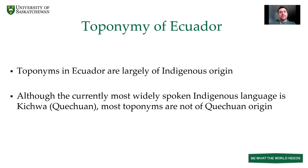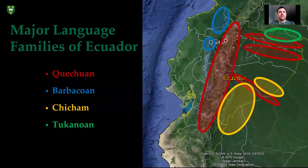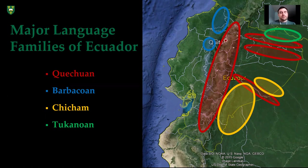Ecuadorian toponyms are largely of indigenous origin. Currently the most widely spoken indigenous language in the country is Kichwa, a Quechuan language, but most indigenous toponyms are actually not of Quechuan origin. To understand this, we have to look at a map of the major languages or language families of Ecuador. This rough map includes the four major language families. The Quechuan circles — the red circles — are concentrated in the central highlands and on three river basins in the Amazonian region. Quechuan is the most widely spoken indigenous language of the country.